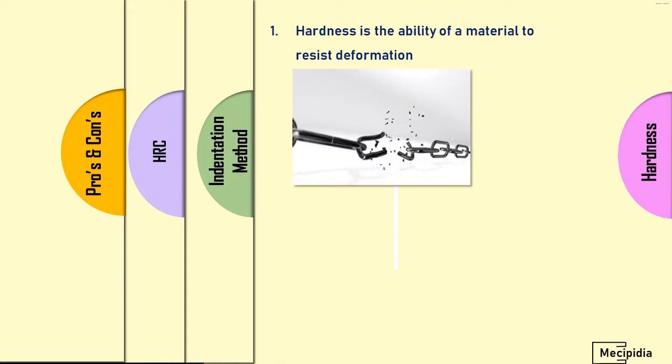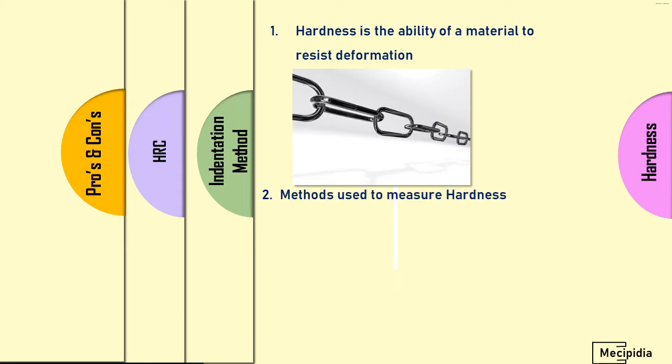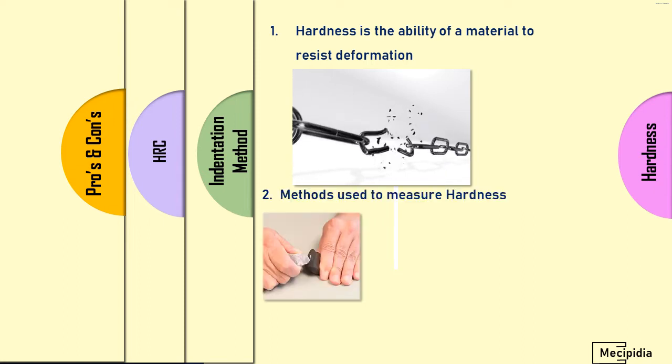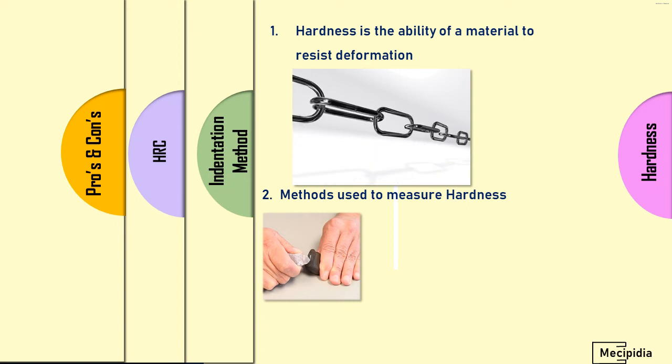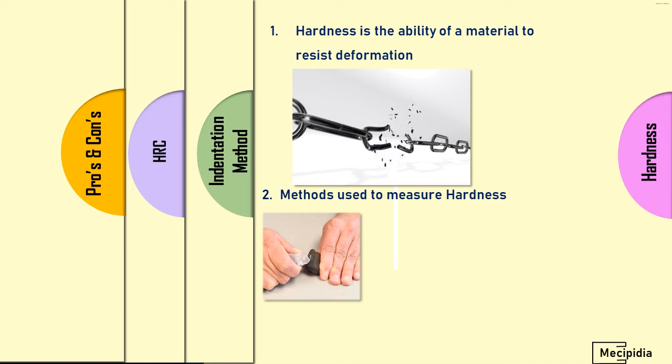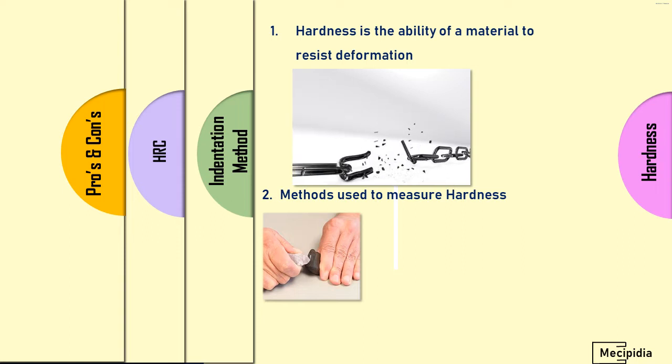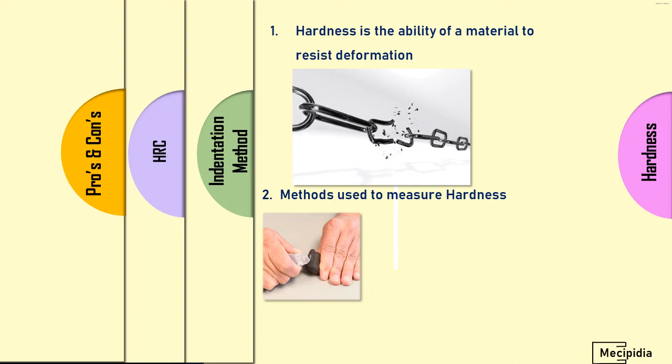Hardness is the ability of a material to resist deformation. Every material has some resistance to deformation, and that is called hardness. You can see the image here - when the chain is getting pulled at a particular load it gets broken. That particular point is called the hardness of that chain.